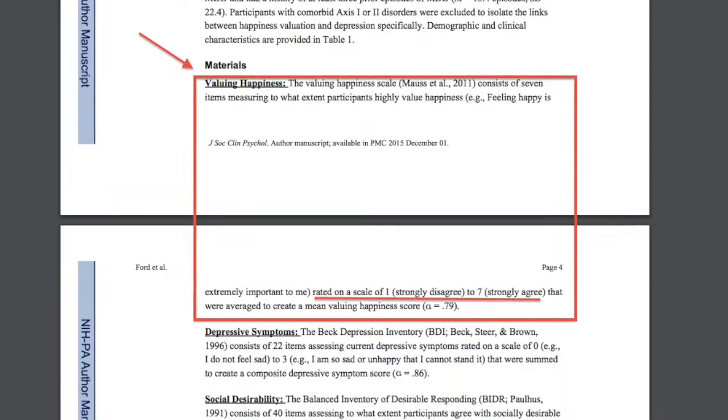Each participant was evaluated using two scales. The valuing happiness scale, which consists of seven items measuring to what extent participants highly value happiness. For example, feeling happy is extremely important to me.